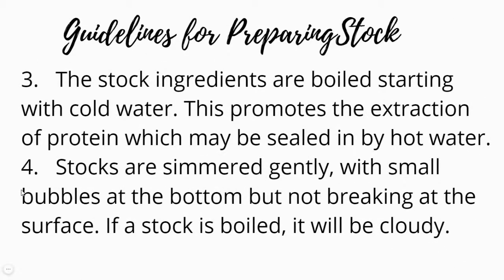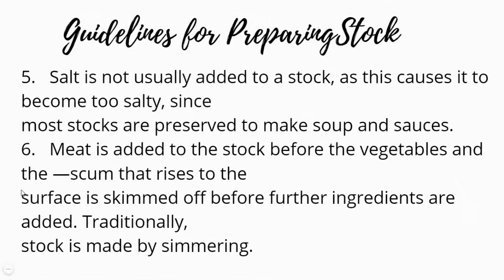3. Stock ingredients are boiled starting with cold water. This promotes the extraction of protein which may be sealed in by hot water. 4. Stocks are simmered gently, with small bubbles at the bottom but not breaking at the surface. If a stock is boiled, it will be cloudy. 5. Salt is not usually added to a stock, as this causes it to become too salty, since most stocks are used to make soups and sauces. 6. Meat is added to the stock before the vegetables, and the scum that rises to the surface is skimmed off before further ingredients are added. Traditionally, stock is made by simmering.